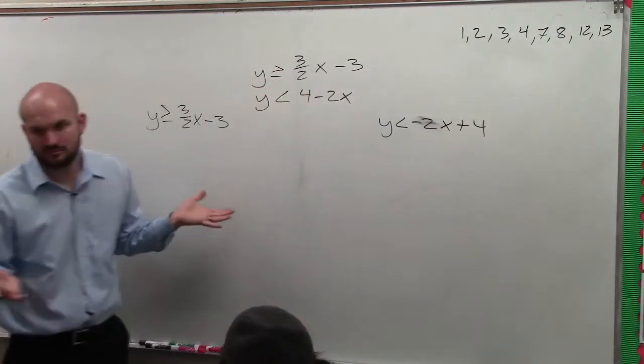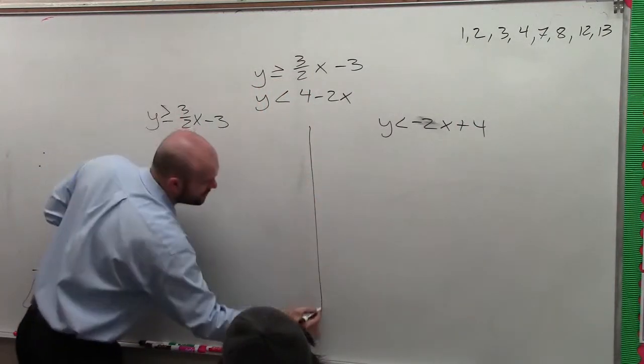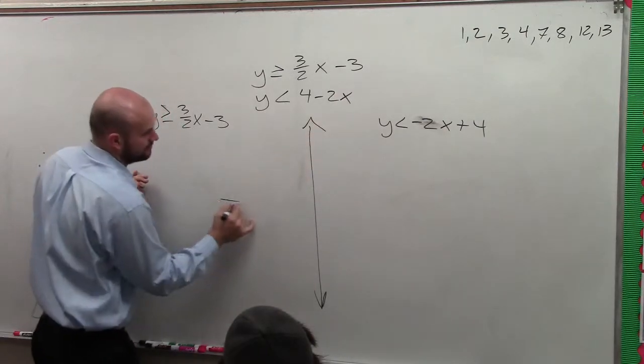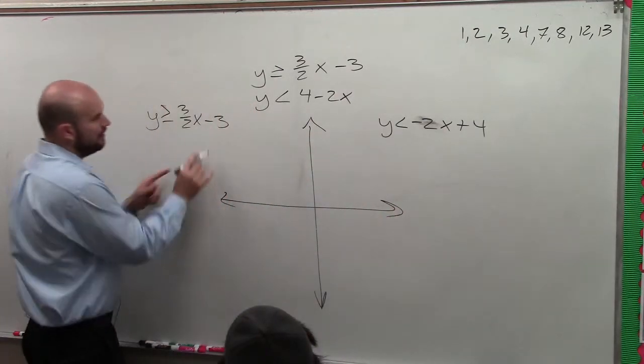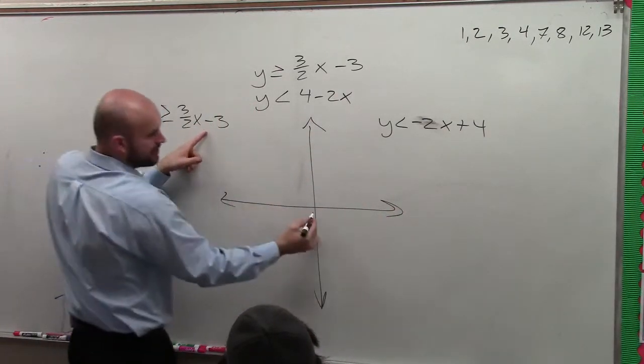Does everybody see what I did? Just rewrote it there. All right, so now let's just, all we're simply doing is graphing these separately. Here my y-intercept is negative 3, so I go down to negative 3, 1, 2, 3,